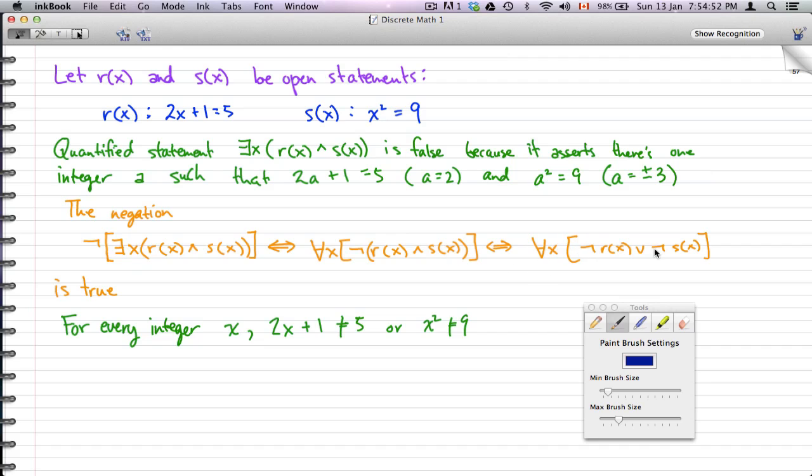Don't forget the for all x quantifier comes before not r(x) or not s(x). This negation is true, and what it says is: for every integer x, 2x + 1 ≠ 5 or x² ≠ 9.